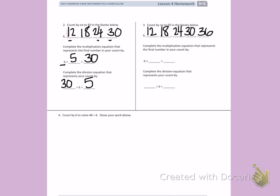Complete the multiplication equation that represents the final number in your count by. I counted by 6 one, two, three, four, five, six times. My final number in your count by. So I have 6 times 6 equals 36.